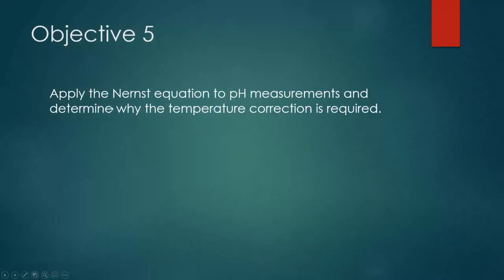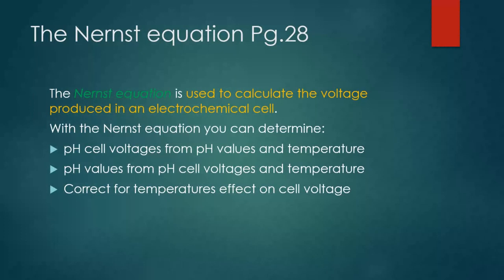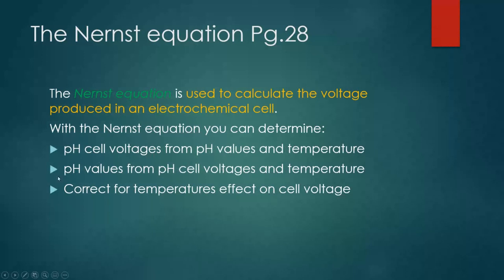Moving on to the last objective in this ILM: using the Nernst equation in wonderfully fun math applied to pH measurements, and determining why temperature correction is required. The Nernst equation is used to calculate the voltage produced inside an electrochemical cell. With the Nernst equation, we can determine pH cell voltages from pH values and temperature, and also get pH values from cell voltages and temperature. We can also use it to correct for temperature effects on cell voltage.